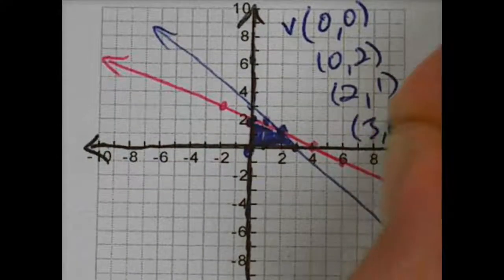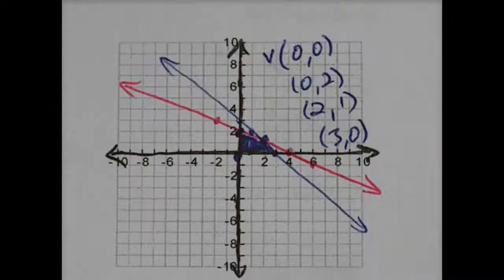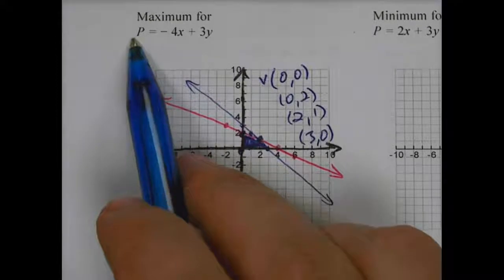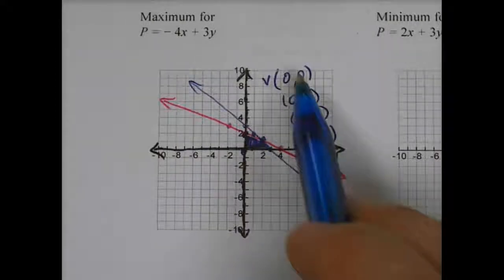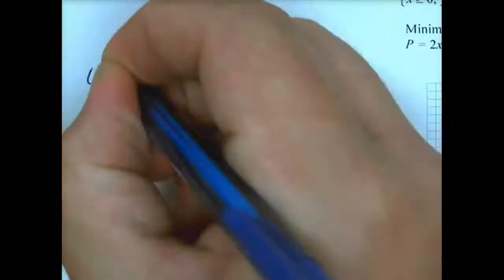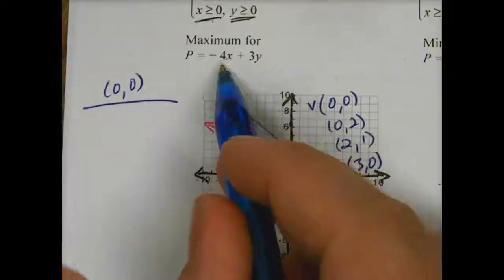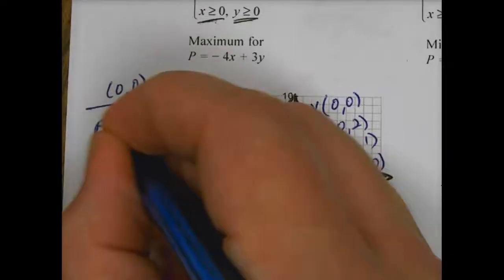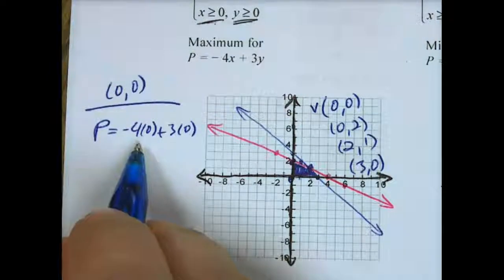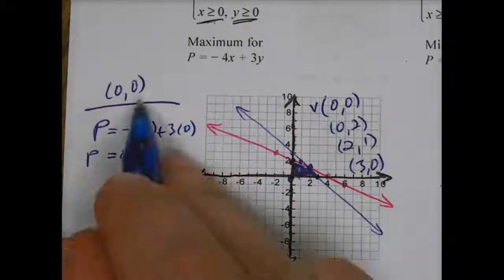So now of those points, it's asking for the objective function. We're either going to maximize or minimize our P, our objective function, based on our vertices points. So the way that we roll through this, for the point 0, 0, if I put that into my objective function P equals negative 4 times 0 plus 3 times 0, negative 4 times 0 is 0, 3 times 0 is also 0, so my P would be 0 for 0, 0.